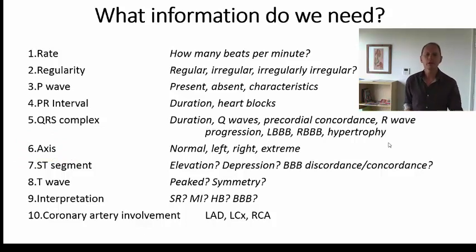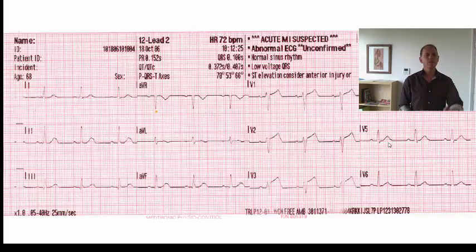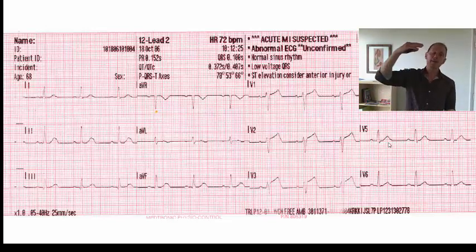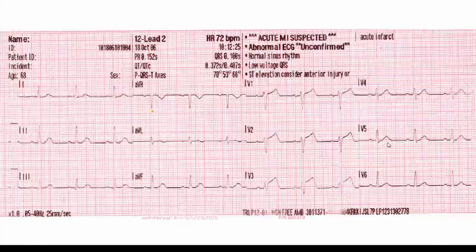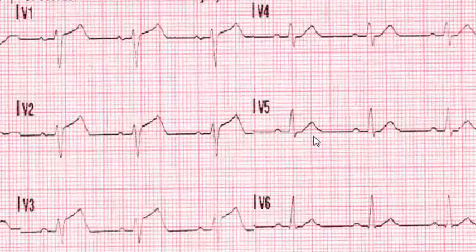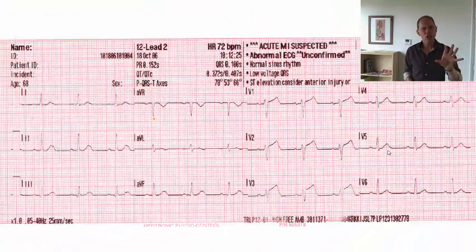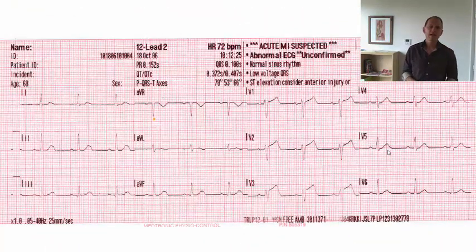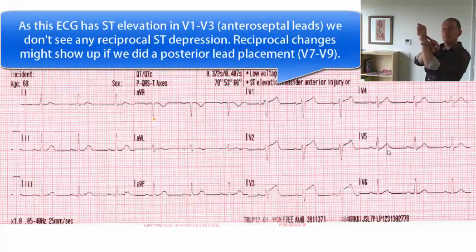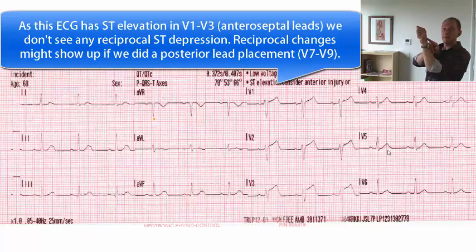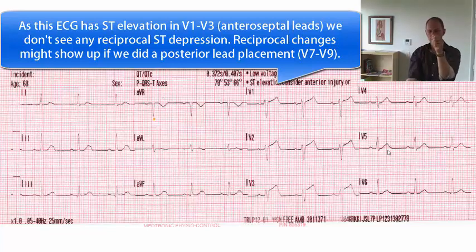Now let's look at our ST segment — that's the period from the J point, or the end of the QRS complex, to the T wave. We're looking at things like ST elevation, which is a really important one to look for. We see ST elevation here in this ECG in a little bit of lead V1, but certainly in V2 and V3. Is there ST depression? ST depression typically is an ischemic change, but it could also be a reciprocal change — you might have ST elevation or an infarction in one portion of the heart, but the lead looking at the opposite side will have a mirror image, which is ST depression. So you might have elevation one side and depression the other.